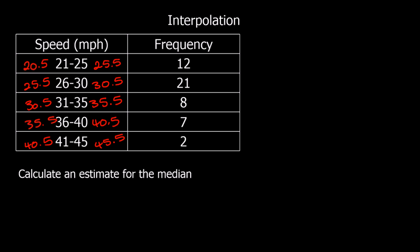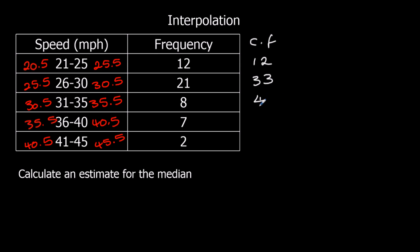We're going to be looking for the median in this question. It's useful to have a cumulative frequency column. Cumulative frequency adds up the frequency as we go. So in the first group we've got 12, then we add on 21, making 33, then add on 8 making 41, then 7 making 48, and then plus 2 is 50.